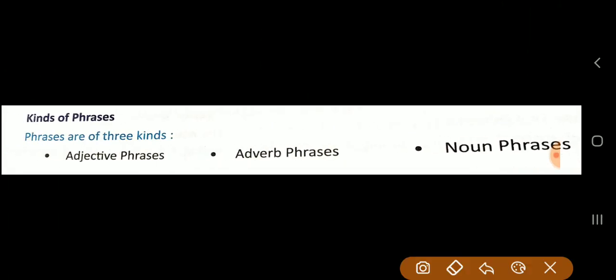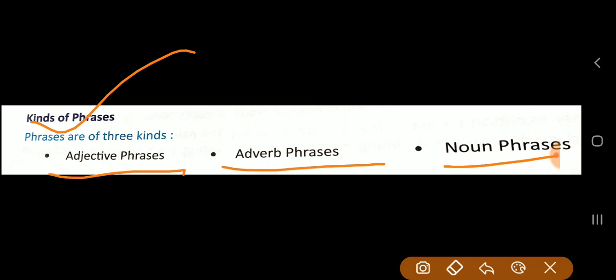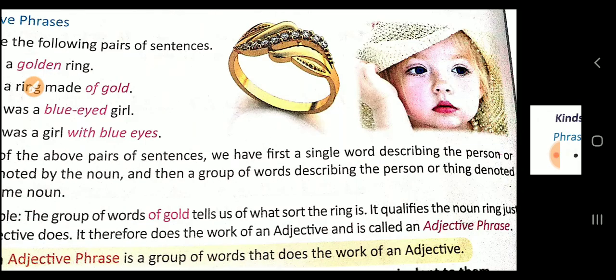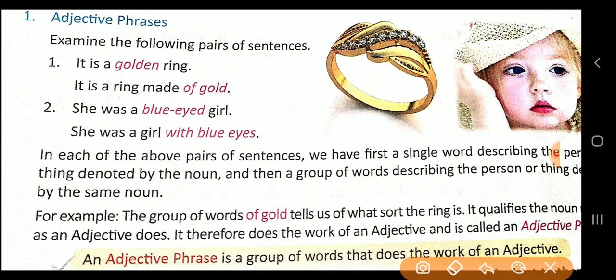There are three kinds of phrases: first, adjective; second, adverb; and third, noun. Now we shall begin with adjective phrases. For example: 'It is a golden ring' — 'it is a ring made of gold.' 'She is a blue-eyed girl' — 'she was a girl with blue eyes.'